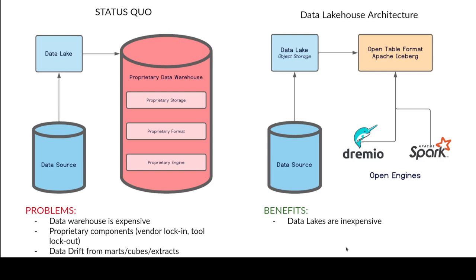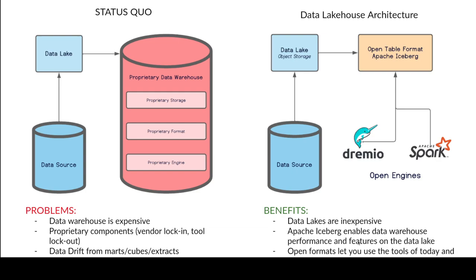It's a data lake with data warehouse features — a data lake that feels like a data warehouse. Apache Iceberg enables data warehouse-like performance because its metadata allows query engines to go beyond their own optimizations and query data even more performantly. By using open formats, you avoid lock-in and lock-out. When new tools come out, they can build compatibility with your data — it's an open standard, anyone can use it, so future tools will just work.